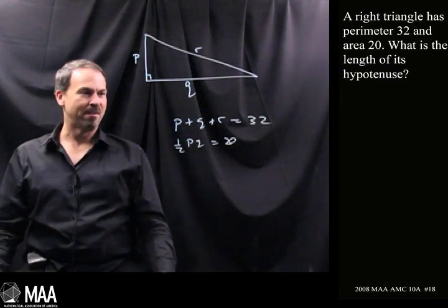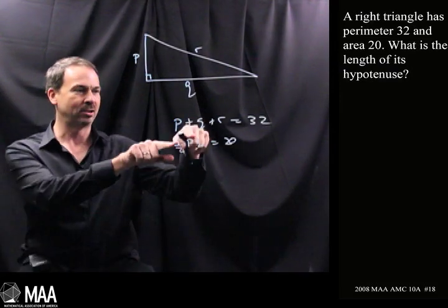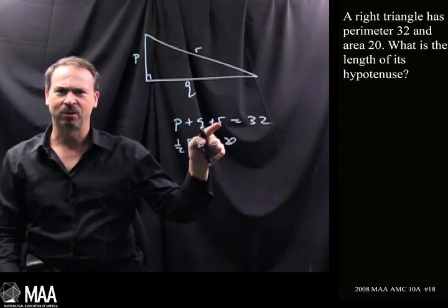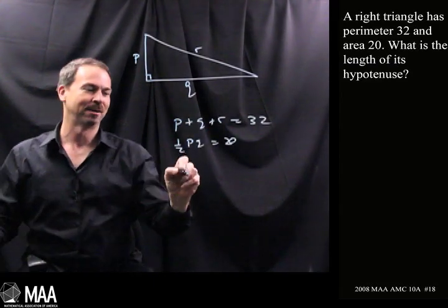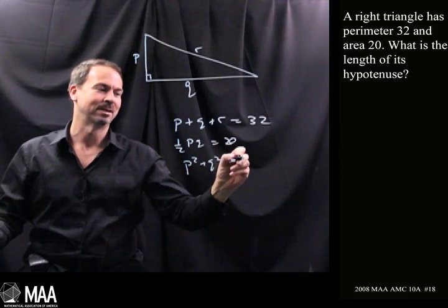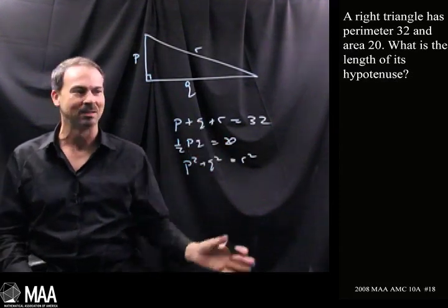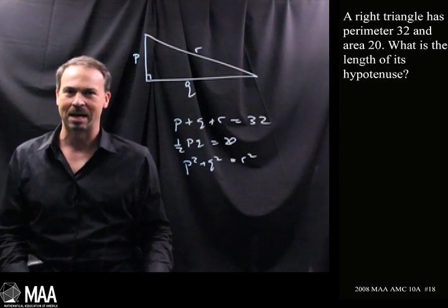So actually maybe it's not a geometry problem after all. Maybe it's more an algebra problem. I've got two equations and three unknowns. Well I guess we do have another equation up our sleeve. It is a right triangle so P squared plus Q squared equals R squared. All right, technically three equations and three unknowns. We should be able to work out P, Q and R.